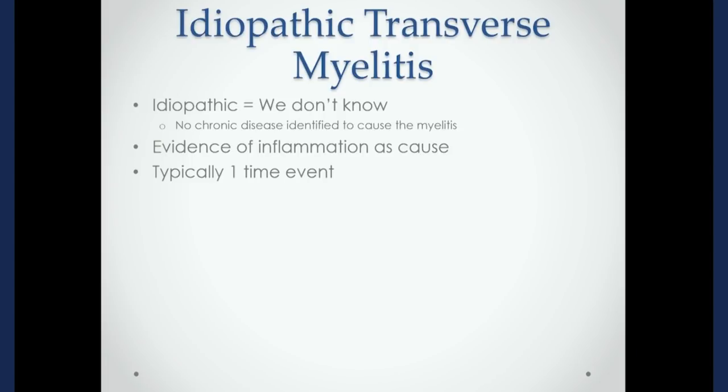Idiopathic transverse myelitis is a subtype of transverse myelitis that is usually an isolated event and a somewhat common form of myelitis. The word idiopathic means we don't know — we don't understand exactly what happened. Specifically, we don't know because we aren't finding evidence of a chronic disease that's going to put a patient at risk for additional problems, and there's no specific marker of why the condition occurred. There does have to be some form of support to say that it was an inflammatory problem, and as I said, it's usually a one-time event.